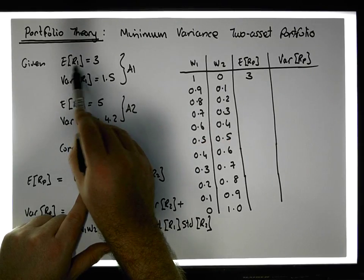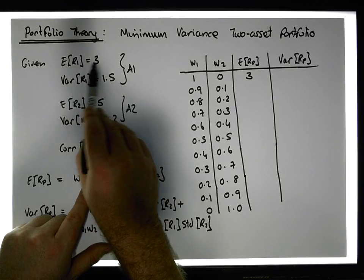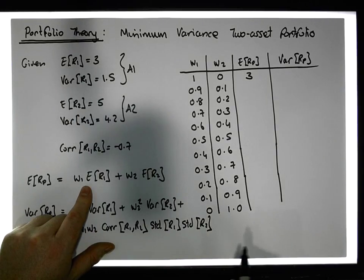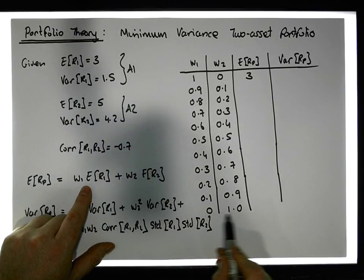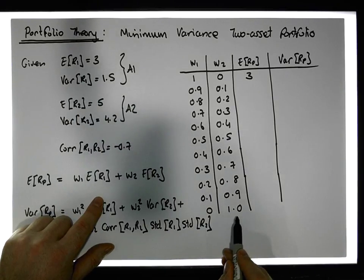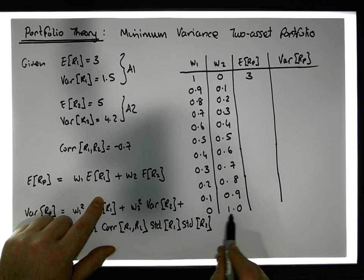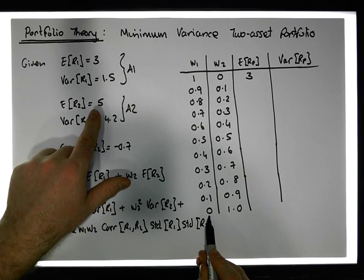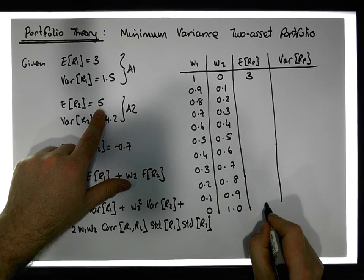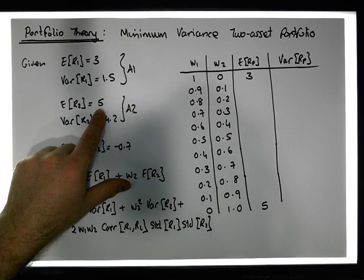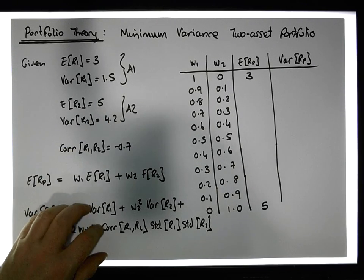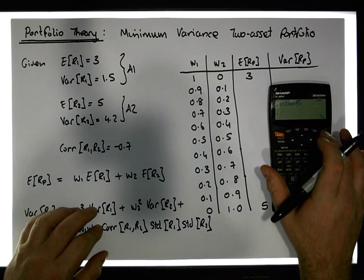Similarly, when we have 100% of asset two in the mix and zero percent of asset one, we're actually going to get a return of what asset two is expected to return, which is five percent.